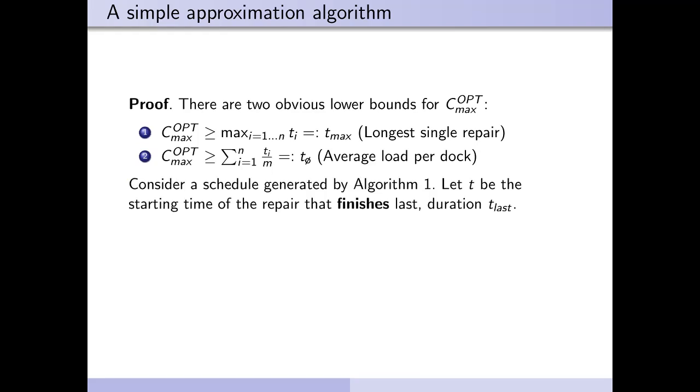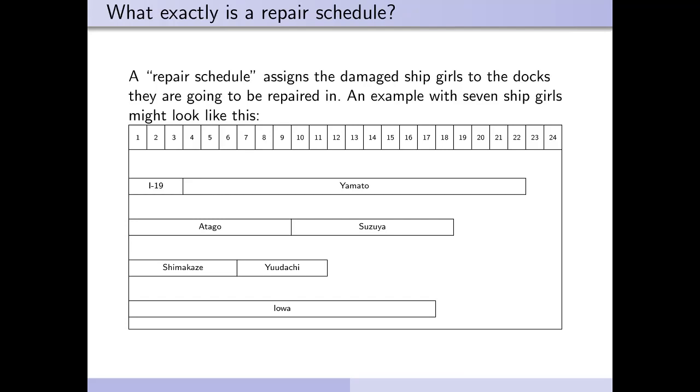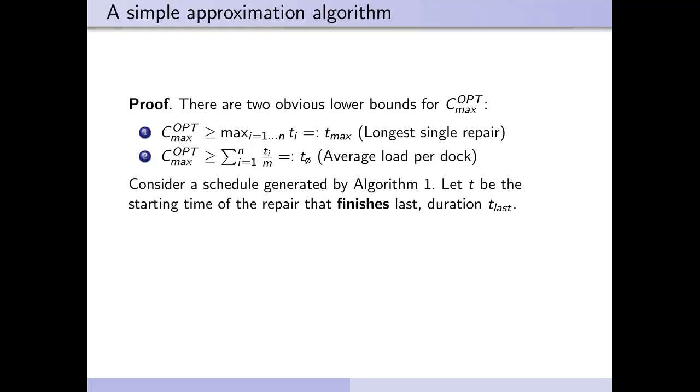Now consider a schedule generated by algorithm 1. Let t be the starting time of the repair that finishes last, duration tlast. Note that the last finishing repair does not necessarily need to be the last starting repair. If we jump back and take a quick look at our little example schedule, the last finishing repair would be Yamato, even though it started very early. It is, I think, very easily understood that the total repair time equals the starting time of the last finishing repair plus its duration.